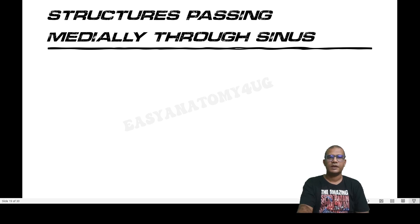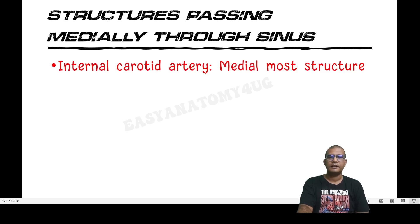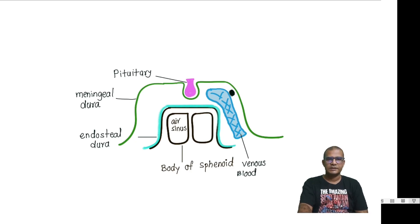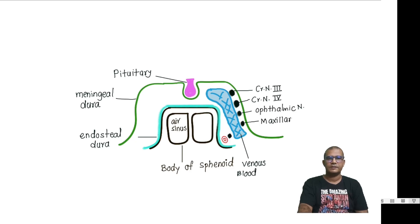The structures passing through or near the medial wall of the cavernous sinus are: the internal carotid artery, which is the most medial structure, and the abducent nerve (cranial nerve 6). In summary, the lateral wall contains cranial nerves 3, 4, ophthalmic (V1), and maxillary (V2), while the internal carotid artery and abducent nerve are present in the medial wall.